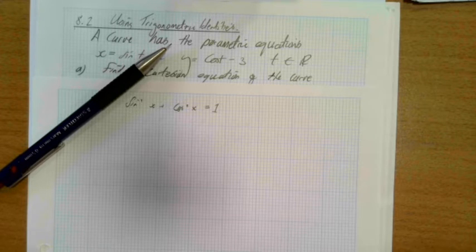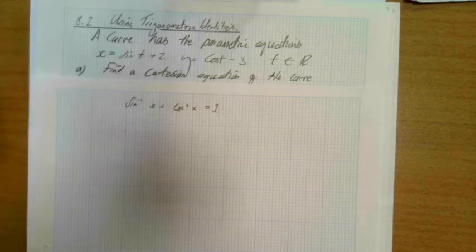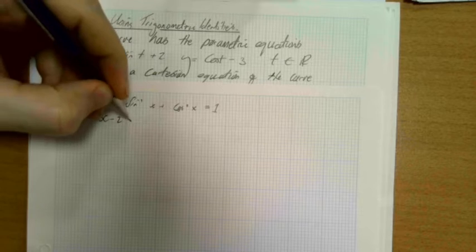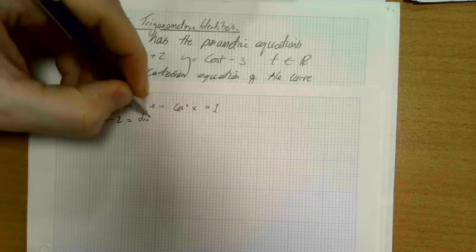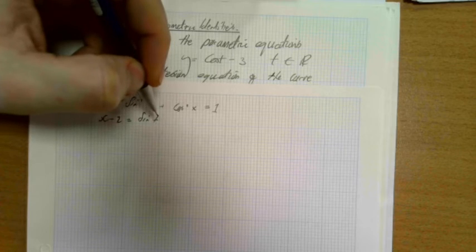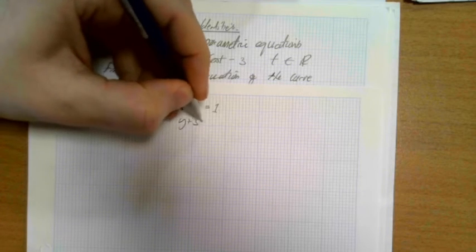So if I rearrange this first equation, I'm going to get x minus 2 is equal to sine t. And if I do the same with my other equation, I'm going to get that y plus 3 is equal to cos t.